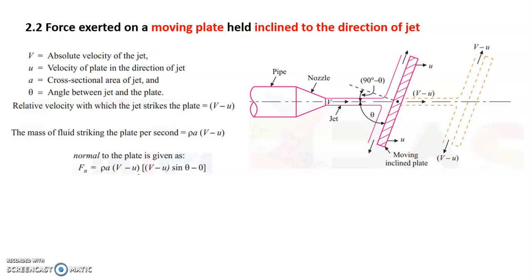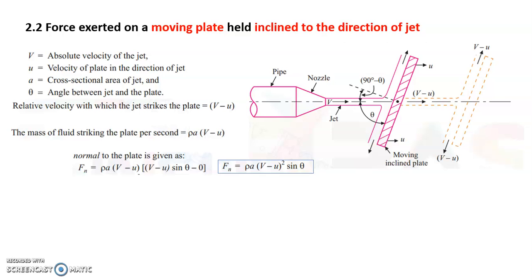Fn is the force normal to the plate, calculated along the axis normal to the plate. We resolve v minus u in this normal direction, giving v minus u sine theta (or equivalently v minus u cos(90 minus theta)). The velocity before striking in the normal direction is v minus u sine theta, and after striking there is no velocity component in the normal direction — it is zero. Therefore, Fn equals rho times a times (v minus u) squared times sine theta. For reference, in the stationary case Fn was rho times a times v squared times sine theta.